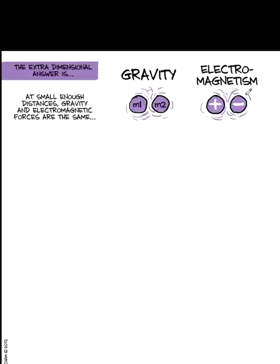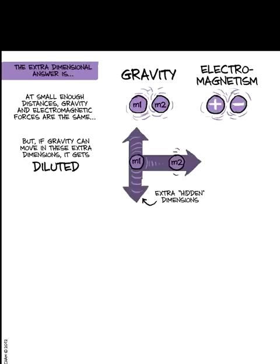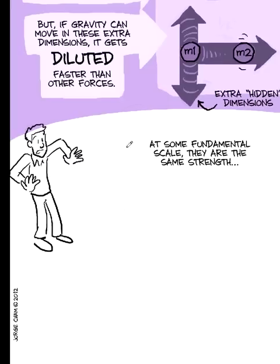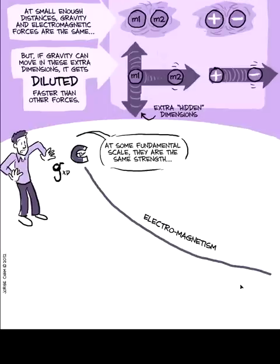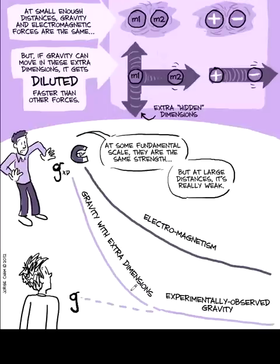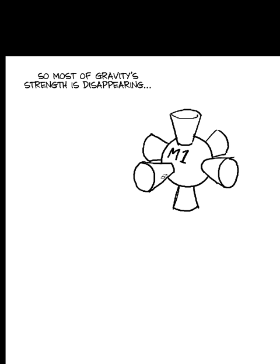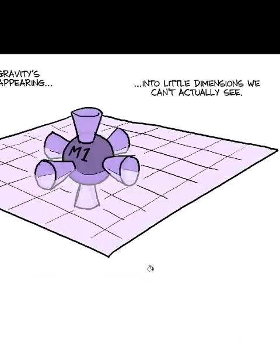And the extra-dimensional answer is, well, actually, at small enough distances, they're actually the same. But because there's extra dimensions, gravity is actually getting diluted, let's say, one over r to the fourth power law. So it's actually, at some sort of fundamental scale, it's actually the same strength as electromagnetism. But as you go to larger distances, it drops much faster than the electromagnetic one. So most of gravity's strength is disappearing into these little dimensions that we can't actually see.